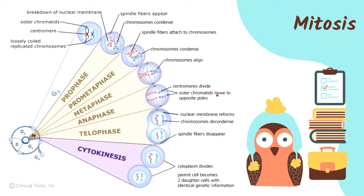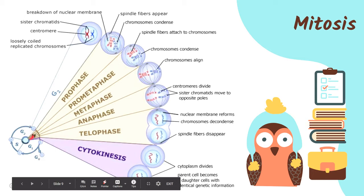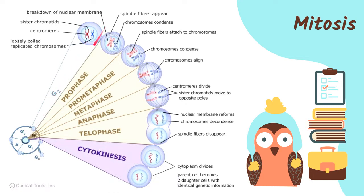These are the stages of mitosis — use the acronym PMAT to help you remember. Going back to the cell cycle, we start the stages of mitosis right after the cell underwent Gap 2. During Gap 2, the cell assembles all the structures it will need for cell division. Right after Gap 2, the first stage of mitosis is prophase, where the spindle fibers appear — those thread-like structures — and the chromosomes condense.